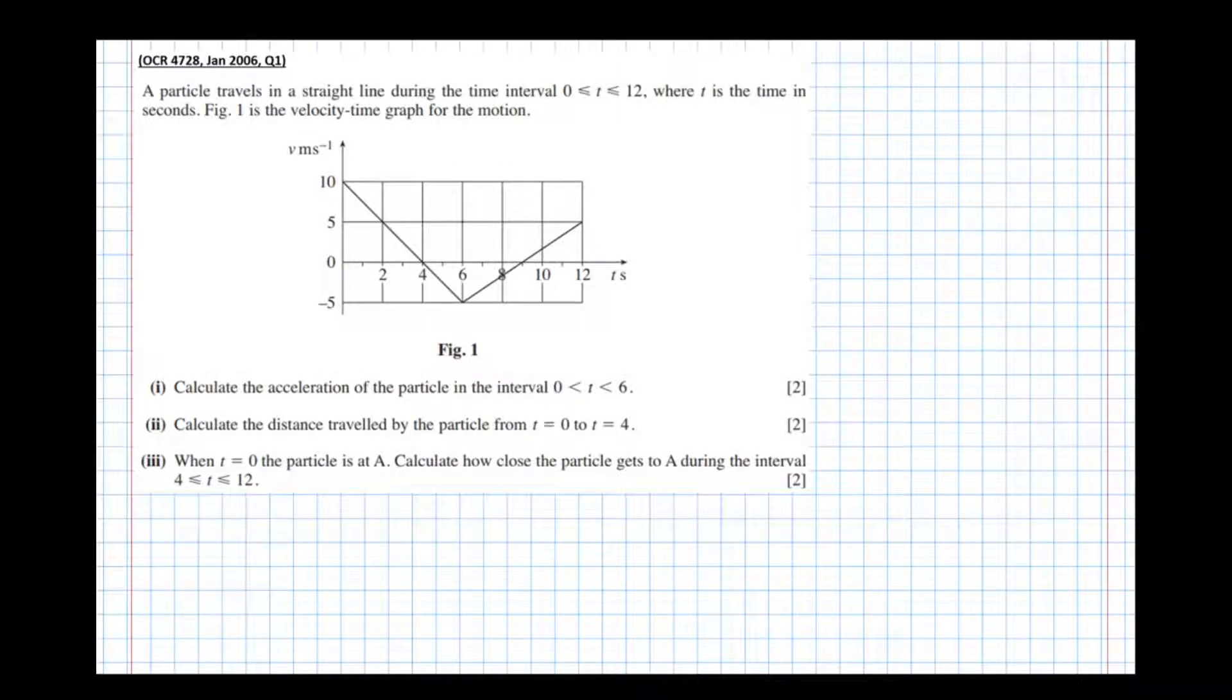In this video we're going to have a look at an exam question on velocity time graphs. A particle travels in a straight line during the time interval t between 0 and 12 seconds, where t is the time in seconds. Figure 1 is the velocity time graph for the motion.